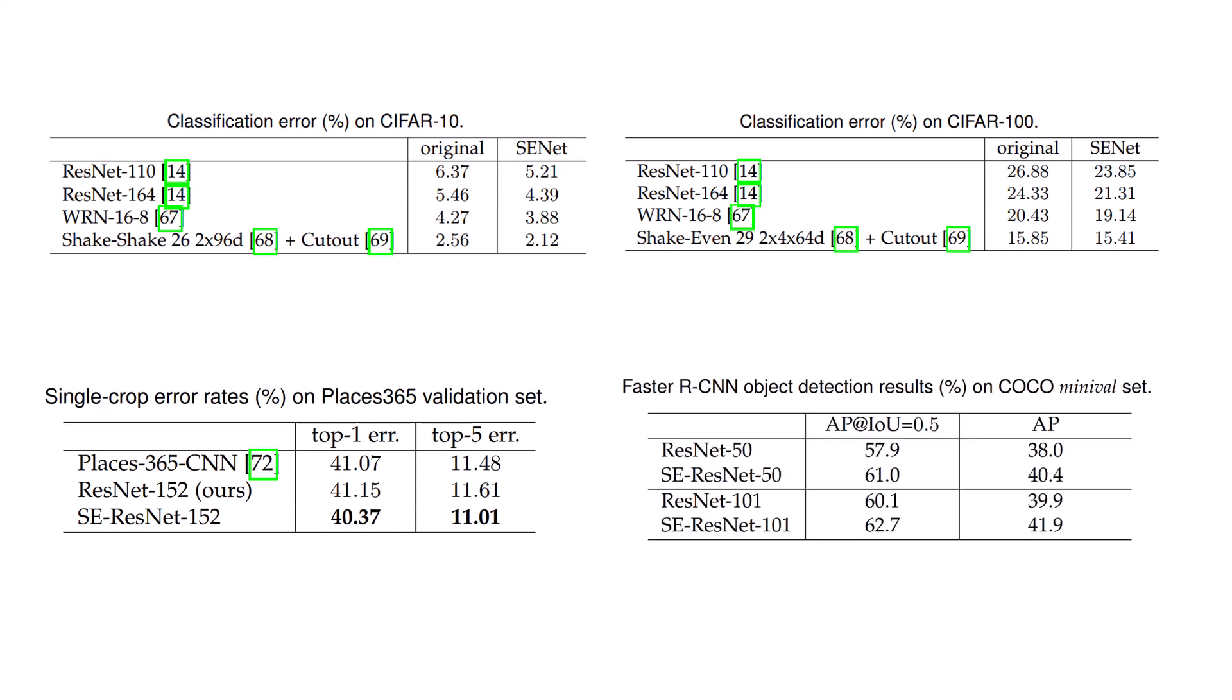And also even with object detection tasks, they used Faster R-CNN, and saw that if we just add SENet to the backbone block, the average precision would be even better.